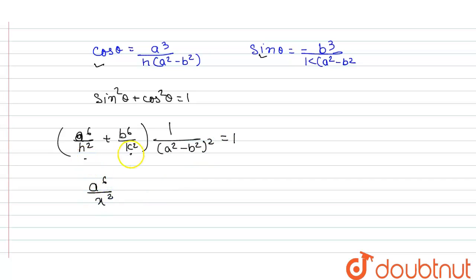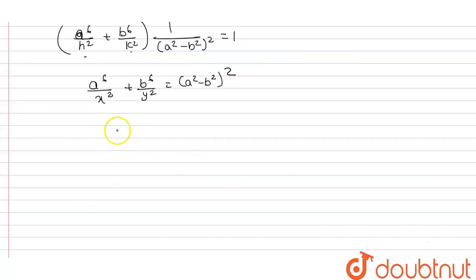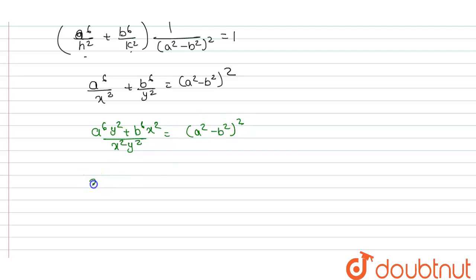Replacing h and k with x and y, the locus equation is: a⁶/x² + b⁶/y² = (a² - b²)². Taking the LCM of x²y², this becomes: a⁶y² + b⁶x² = x²y²(a² - b²)². This is the required locus.